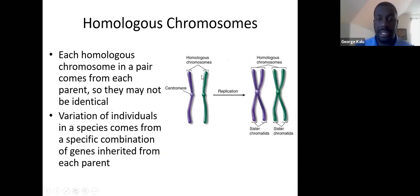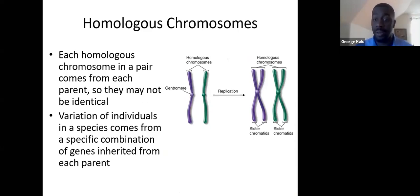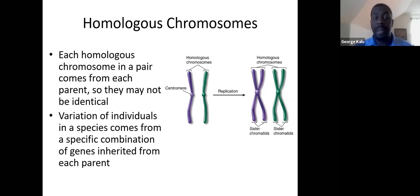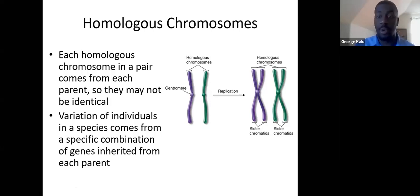Each pair of homologous chromosomes comes from a different parent — one from mom, one from dad. Because they come from different parents, there's a high chance those chromosomes are not identical, which leads to variation between individuals of a species. Everyone looks different because they inherit different traits and different genes from their parents.